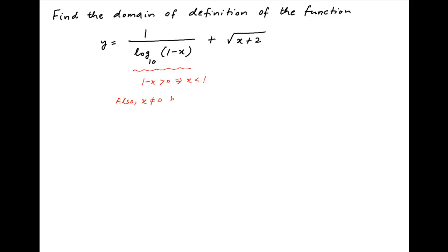Also, x should not be equal to 0, because when x equals 0, the first term, which is 1 upon log of 1 minus x to the base 10, is equal to 1 upon log of 1 to the base 10, which is equal to 1 upon 0, that tends to infinity.